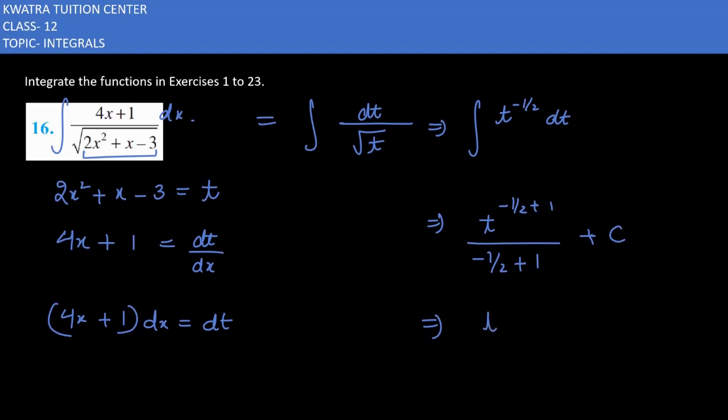In the next step it will be t^(1/2), then in the denominator it is 1/2. So 2 will be taken to the numerator. It is 2 times t^(1/2) plus a constant.